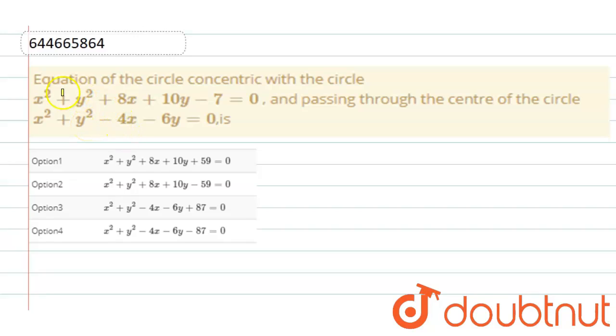Here the question is: equation of the circle coincident with the circle x square plus y square plus 8x plus 10y minus 7 equals 0 and passing through the center of the circle x square plus y square minus 4x minus 6y equals 0.